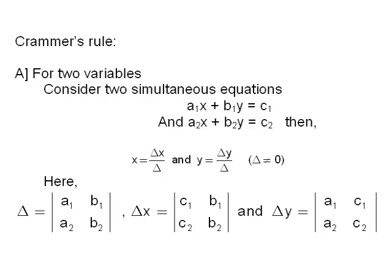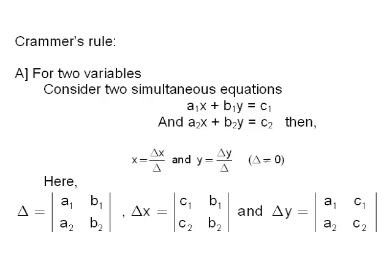Cramer's rule for two variables. Consider the two simultaneous equations: A1x + B1y = C1 and A2x + B2y = C2. Then x = Δx/Δ and y = Δy/Δ, provided Δ ≠ 0. Here, the determinant Δ is formed by taking the coefficients of x and y in the given equations in their order — this is called the determinant of the coefficients. The determinant Δx is obtained from Δ by replacing the coefficients a1, a2 of x by C1, C2 respectively (the constant terms). Similarly, Δy is obtained from Δ by replacing the coefficients b1, b2 of y by C1, C2 respectively.